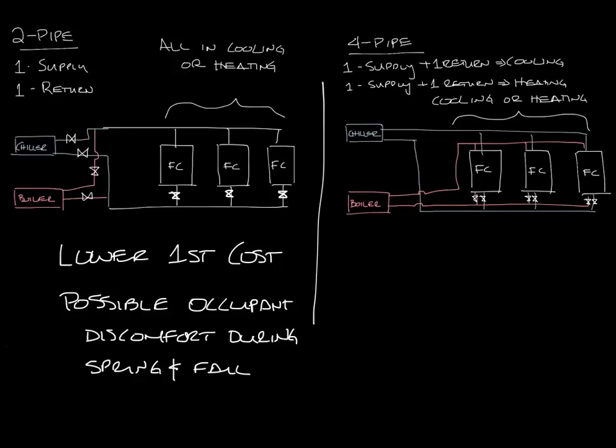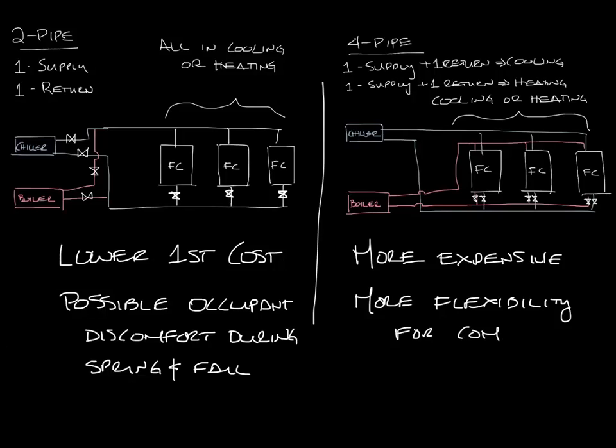A four-pipe system is more expensive because you've got more valves and more piping running through the building but you do have more flexibility to provide comfort to different zones at the same time. So that's the difference between a two-pipe and a four-pipe system.